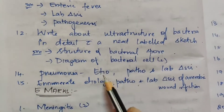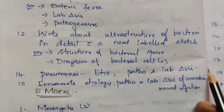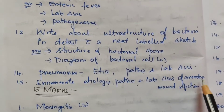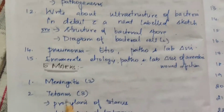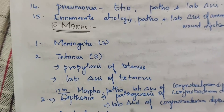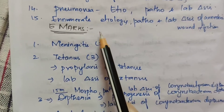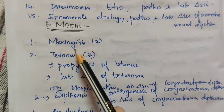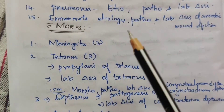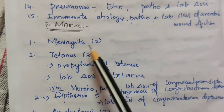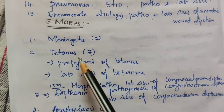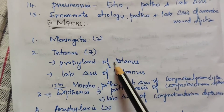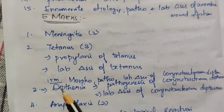The fourteenth topic: pneumonia — its etiology, pathogenesis, and lab diagnosis. Next: enumerate etiology, pathogenesis, and lab diagnosis of anaerobic wound infection. For 5 marks from here, the first topic is meningitis — appeared 2 times. Meningitis notes and video are available on our channel; check the link in the description. The second topic is tetanus — appeared 3 times. For 5 marks: prophylaxis of tetanus and lab diagnosis of tetanus.